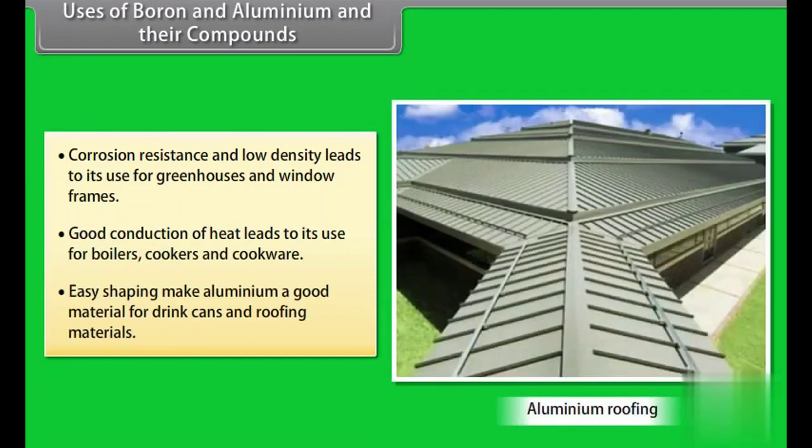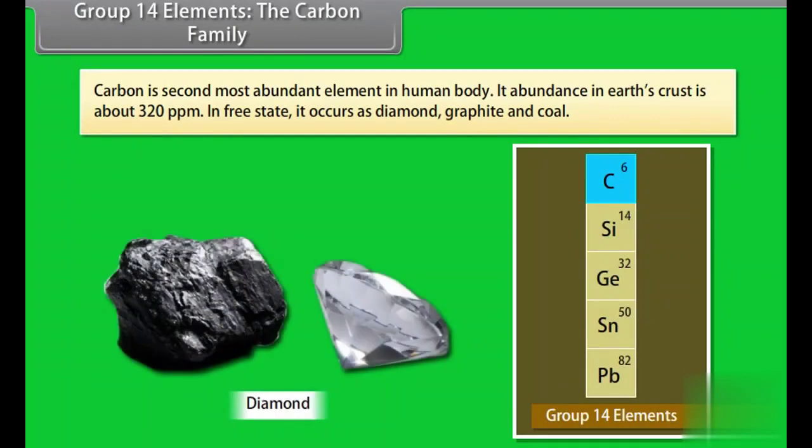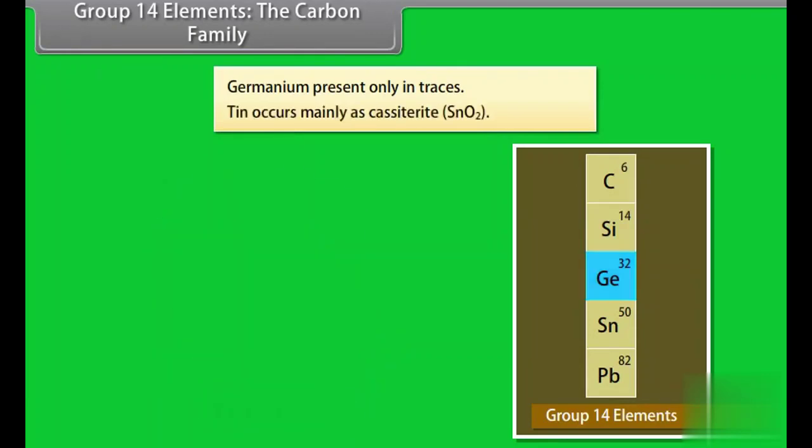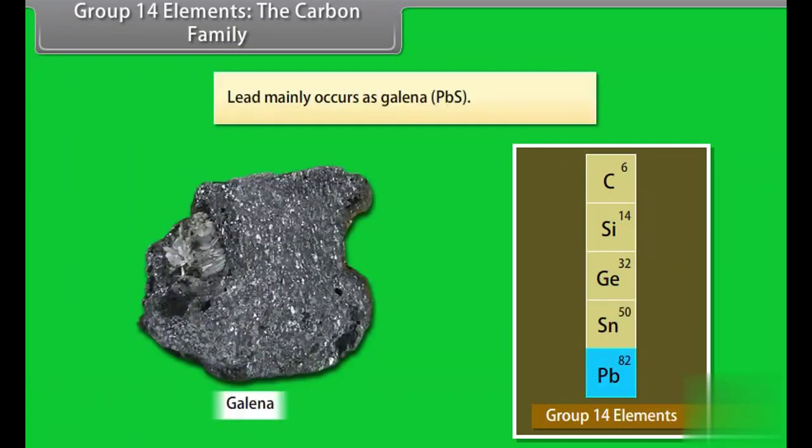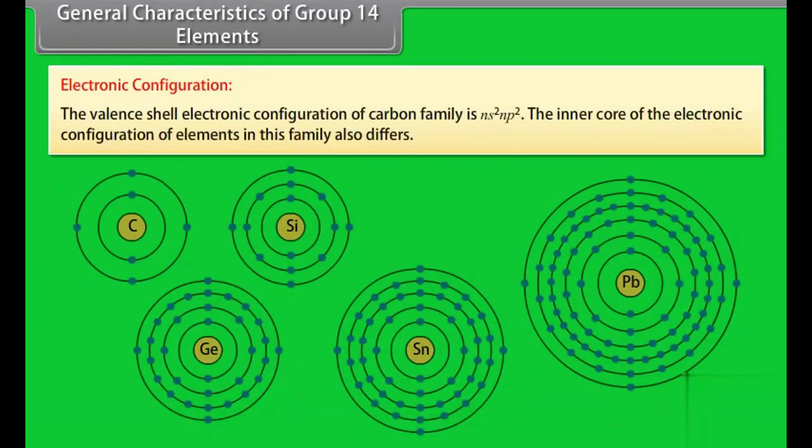Group 14 elements. The carbon family. Carbon is second most abundant element in human body. Its abundance in earth's crust is about 320 parts per million. In free state, it occurs as diamond, graphite and coal. Silicon is the second most abundant element on the earth's crust and is present in nature in the form of silica and silicates. Germanium present only in traces. Tin occurs mainly as cassiterite SnO2. Lead mainly occurs as galena PbS.